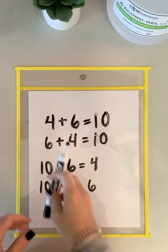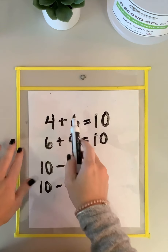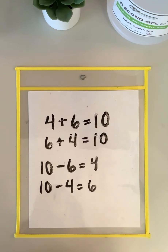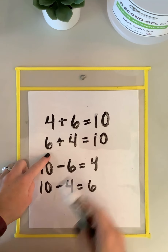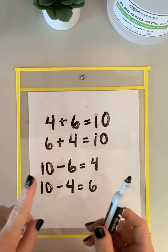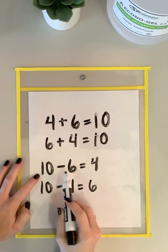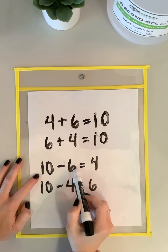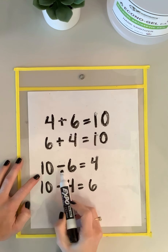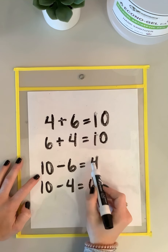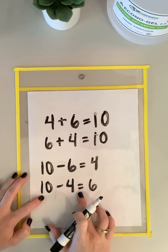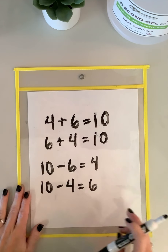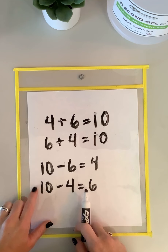Let's look at our fact family for these numbers. I know that 4 plus 6 equals 10 because 6 and 4 are 10's partners. I can also switch these two numbers and instead do 6 plus 4, and I still get 10. Now let's do it with subtraction. I start with 10 and I'm gonna choose one of the one-digit numbers to subtract — I chose 6. When I subtract 6 from 10 I get 4. Now let's switch them: 10 minus 4 equals 6. We used our subtraction 10 partners to solve these problems.